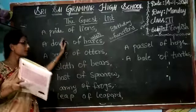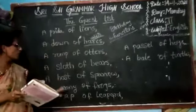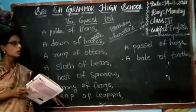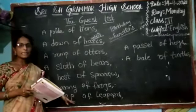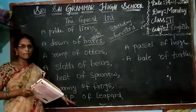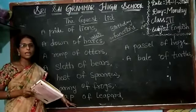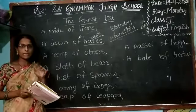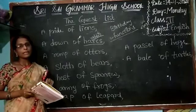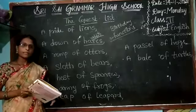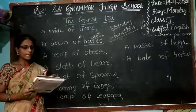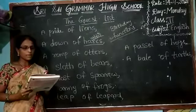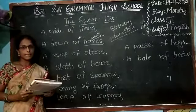We have discussed the first class — Roots of Animals. So note down the animal group names in your notebook. Write them two times as today's homework. We will continue the next part of this lesson in the next class.